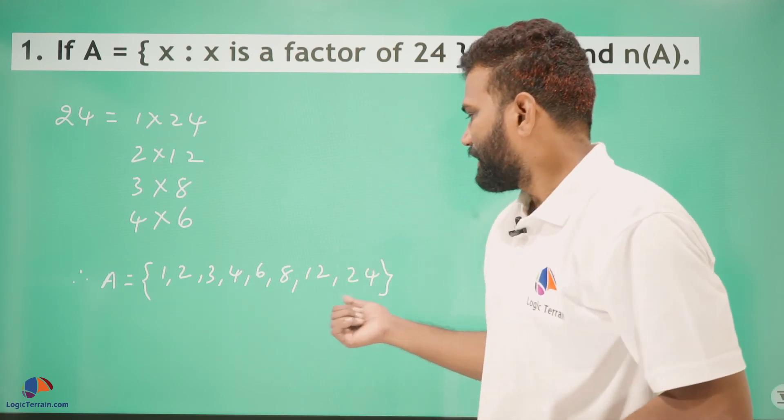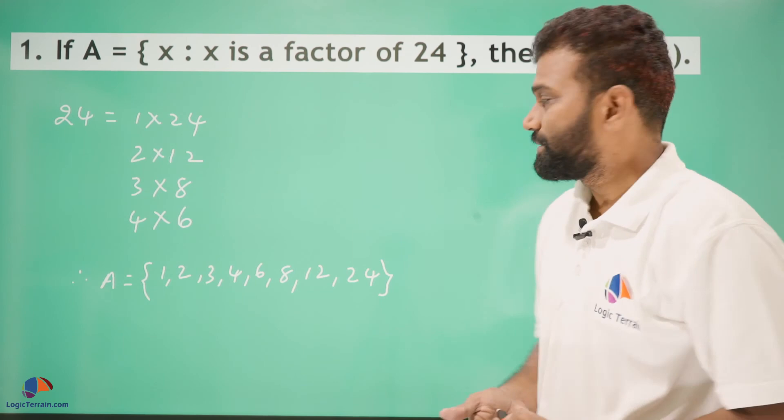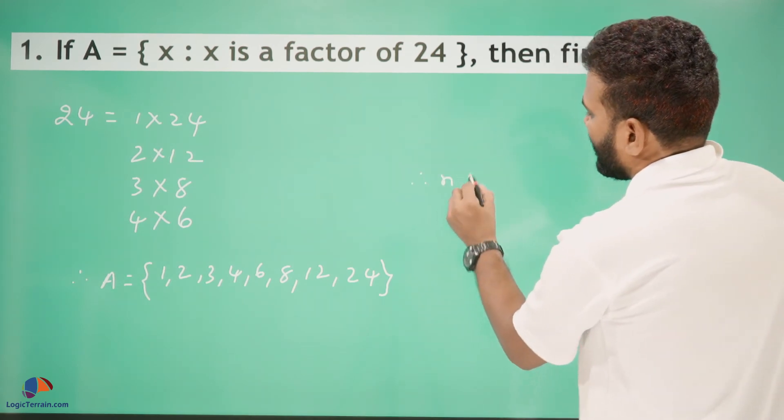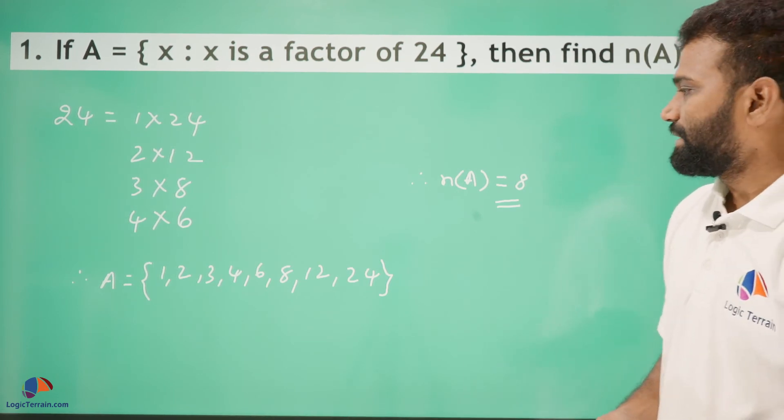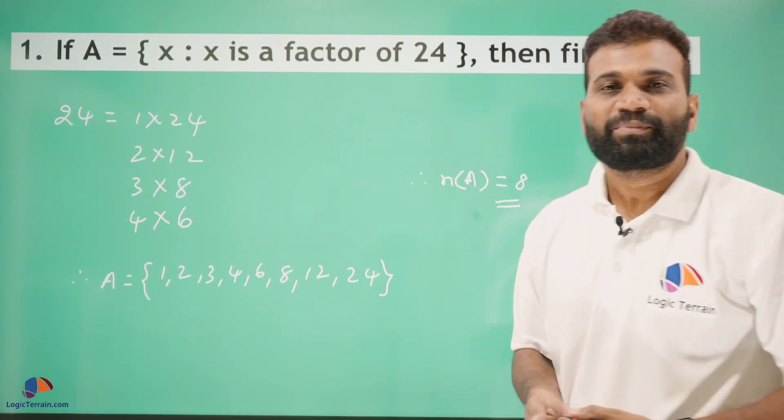In this set, we have a total of 8 elements. Therefore, n(A) = 8. The number of elements in set A equals 8.